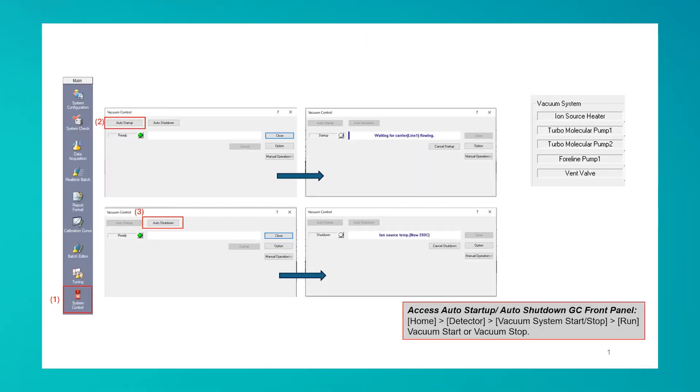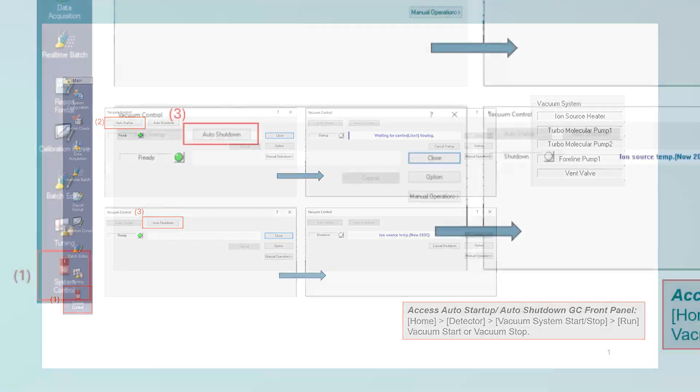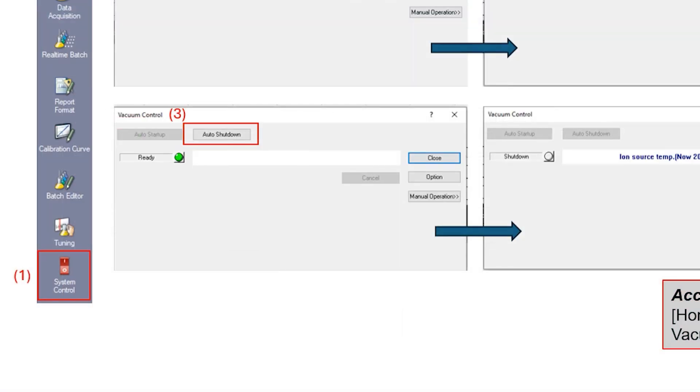To access the ion source, we must first break vacuum on the QP2050 instrument. In the main section of the assistant bar, click the System Control icon, then click Auto Shutdown. This will begin the process of cooling the heated zones, powering down the pumps, and opening the vent valves.